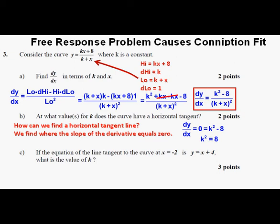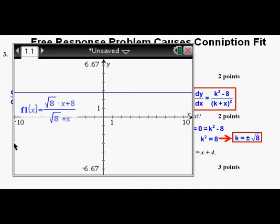We add 8 to both sides of the equation and get k squared equals 8. So k equals plus or minus the square root of 8, which we box in as our correct answer. You might be tempted to simplify this to plus or minus 2 times the square root of 2, but we don't need to simplify free response answers. Graphically, I graphed the original curve replacing k with the square root of 8.